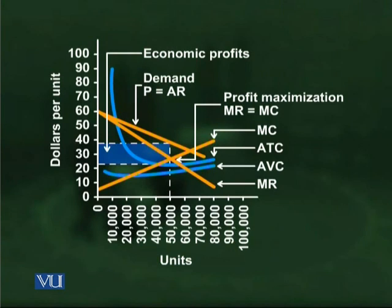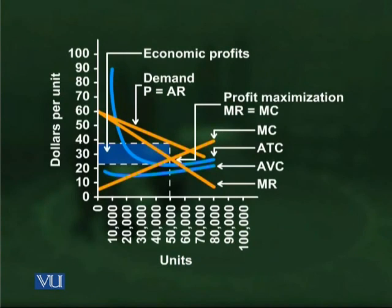For all quantities of output, the marginal revenue curve lies below the average revenue curve, except at the first unit of production where the two curves originate. The profit maximizing level of output is where marginal revenue equals marginal cost. In the example shown, this is Q = 50,000 units, with a corresponding market price of approximately $37.50 per unit and an average cost of approximately $22.23.